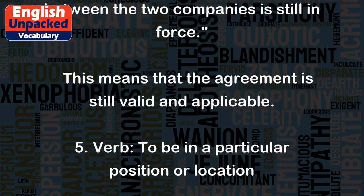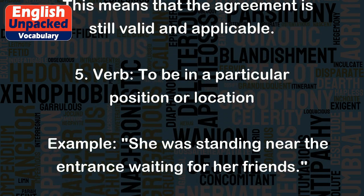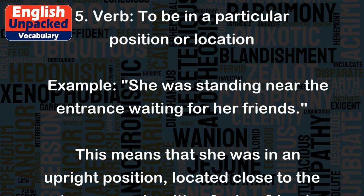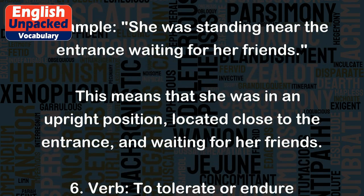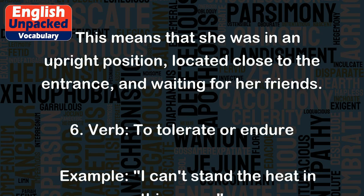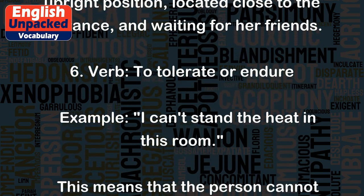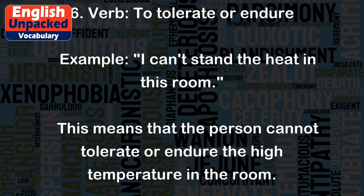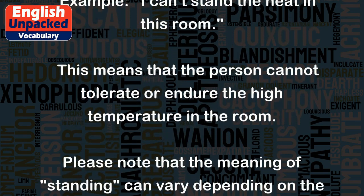5. Verb — To be in a particular position or location. Example: 'She was standing near the entrance, waiting for her friends.' This means that she was in an upright position, located close to the entrance, and waiting for her friends. 6. Verb — To tolerate or endure. Example: 'I can't stand the heat in this room.' This means that the person cannot tolerate or endure the high temperature in the room.